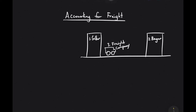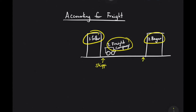In this video, I'm going to talk about accounting for freight — another name for freight is transportation. Here we have three parties: number one, the seller; number two, the buyer; and then the freight company, which transfers the goods from the seller's place to the buyer's place. We have two points: the shipping point, because it is the point where the goods get shipped, and then the destination point.